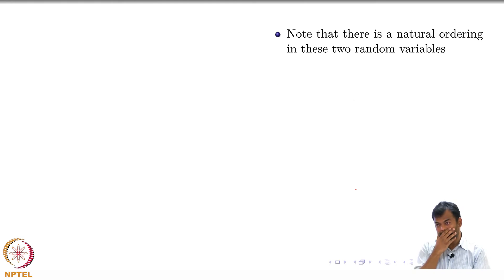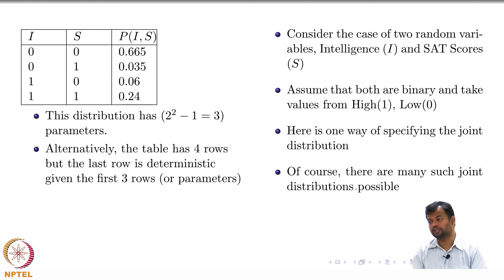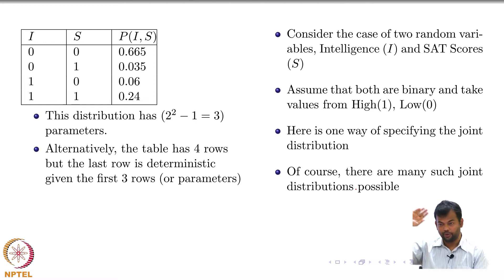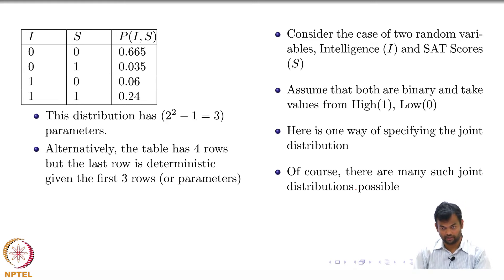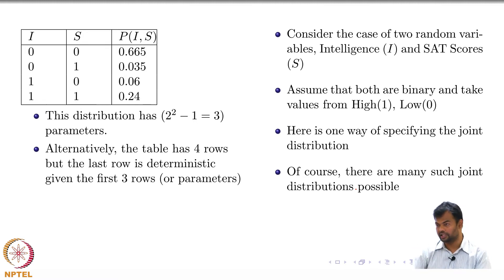I am interested in reducing this number, because in general this is going to be 2^(n-1). I want something less than 2^(n-1). From this small example I cannot do much since 3 is manageable, but we will start here and see how things change drastically when even one more variable is added.